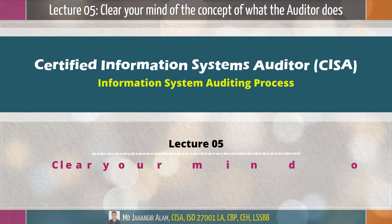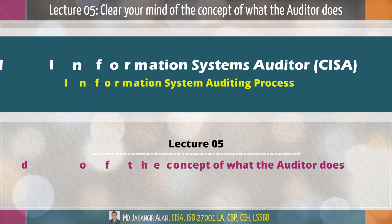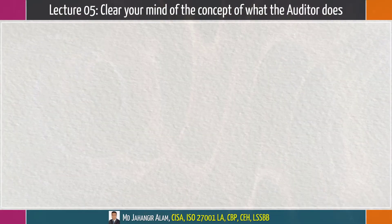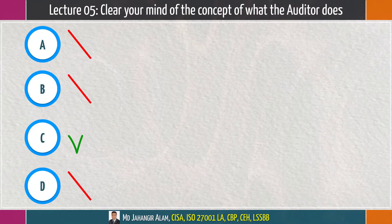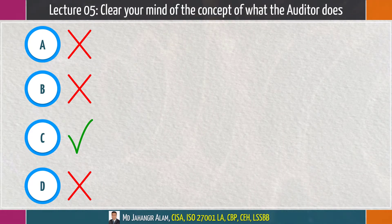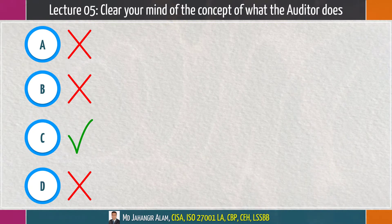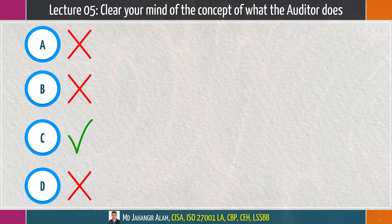Lecture 5: Clear your mind of the concept of what the auditor does. To find out the correct answer among the four options in a CISA exam question, you have to eliminate the wrong options to finally remain with the right one. You won't get much time to do that, so you have to use all the tricks you can. One of the best ones to ace the CISA exam is to truly know and understand the tasks of an IS auditor.